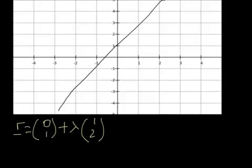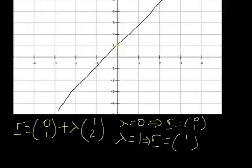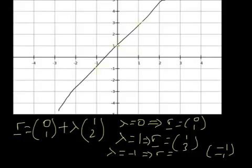Let's take lambda equal to 0. If lambda equals 0, I get r equals 0,1. That's that point. If lambda equals 1, I get r equals 0,1 plus one lot of 1,2, so that's 0 plus 1 equals 1, and 1 plus 2 equals 3 — so r equals 1,3, which is that point on the line. If lambda equals minus 1, I get 0,1 plus minus 1, minus 2, which gives minus 1, minus 1 — that's this point here. So you can see that this vector equation is taking us to points on the line.